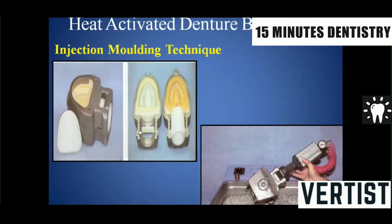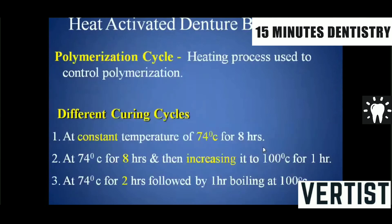In the injection molding technique, the material is forcefully injected through a channel created in the special Ivocap-type flask. This technique is somewhat more technique-sensitive. The most common technique used is heat-activated denture base resin processing, which most students practice in preclinical lab. Once packing is done and bench curing is complete, the material is subjected to a polymerization cycle.